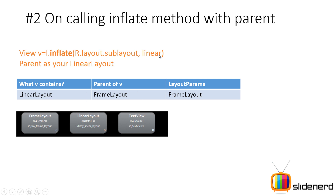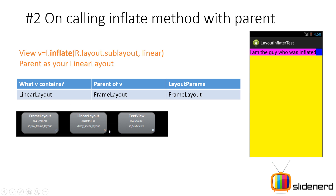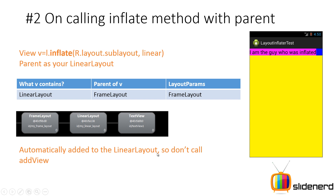It is done right here in the first step where you specified that the LinearLayout should be the parent of R.layout.sublayout which contains the TextView. The appearance looks the same — there is no difference at all, you won't be able to tell anything. It is automatically added to the LinearLayout, so don't call addView here. You just went one step ahead and simply added it automatically.